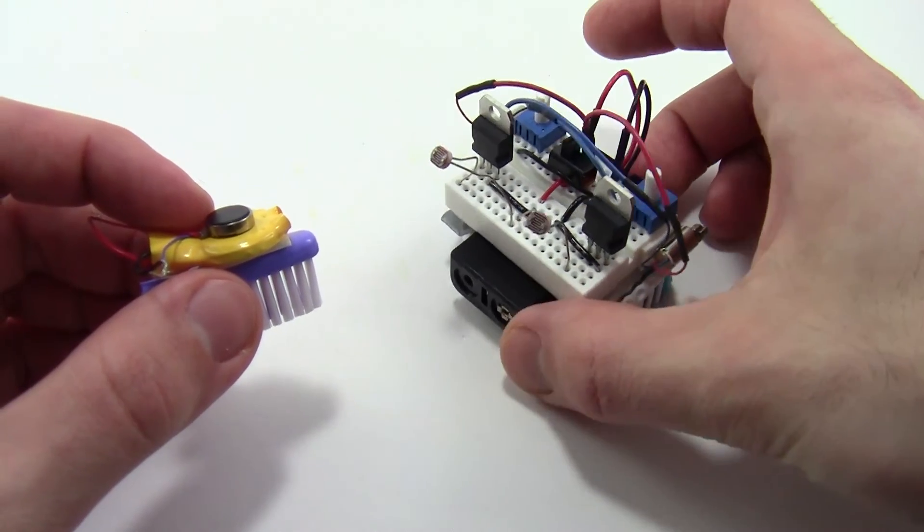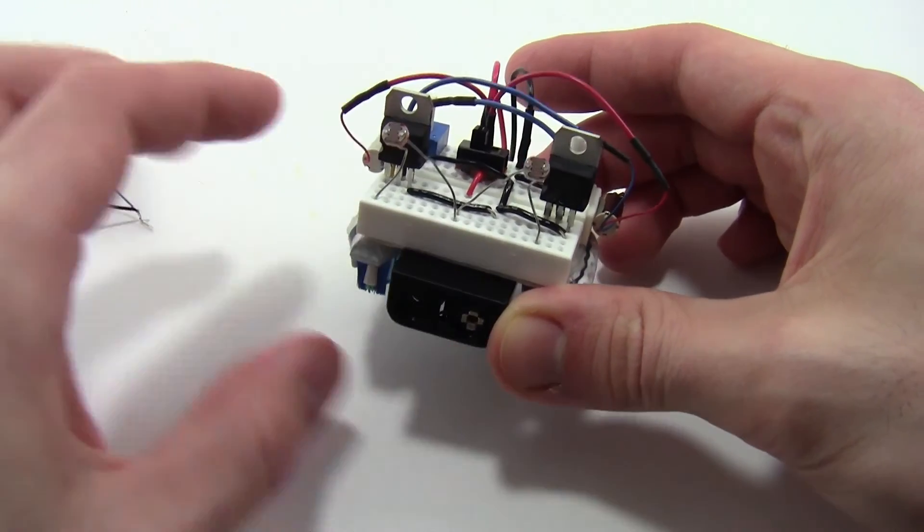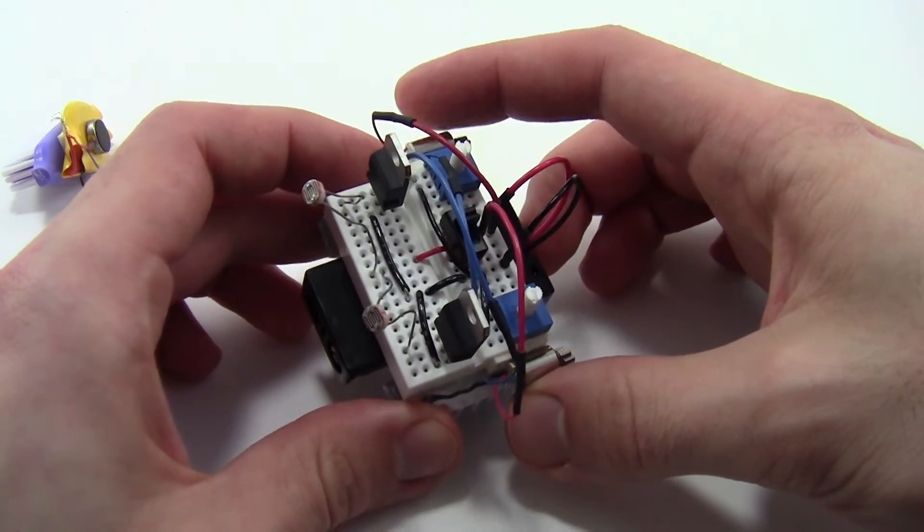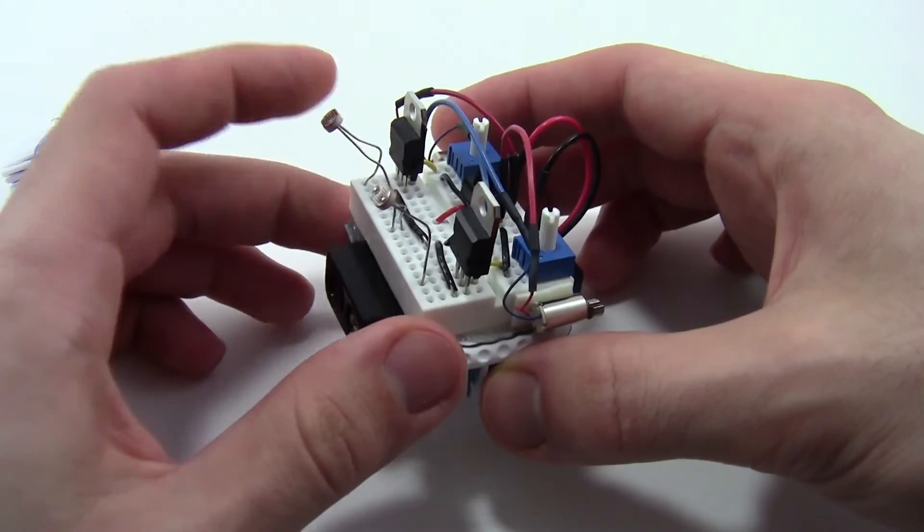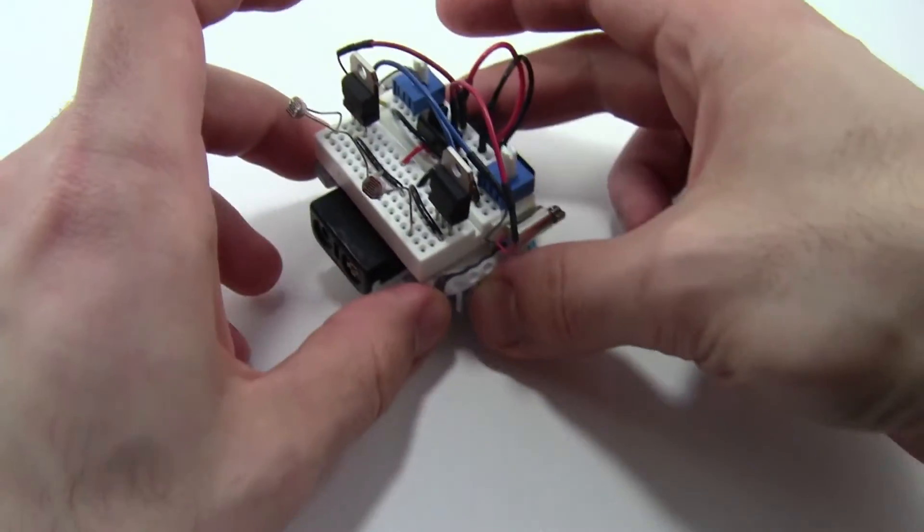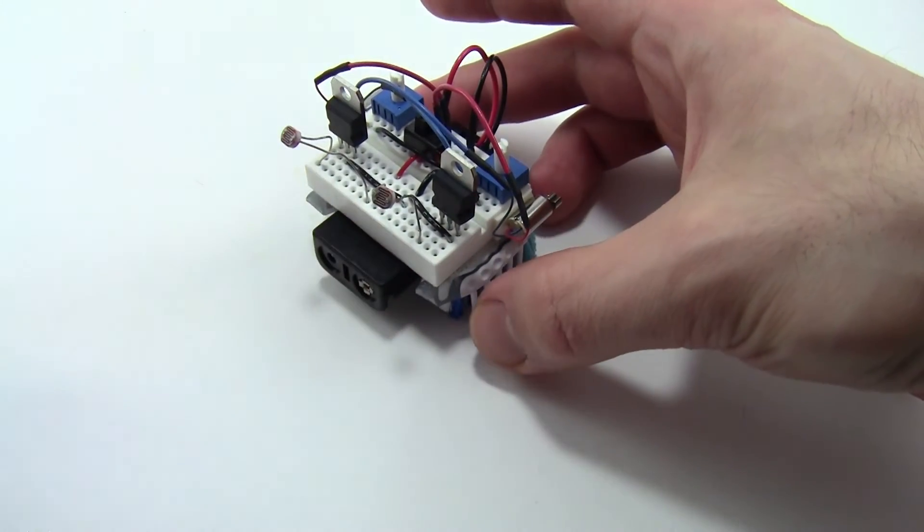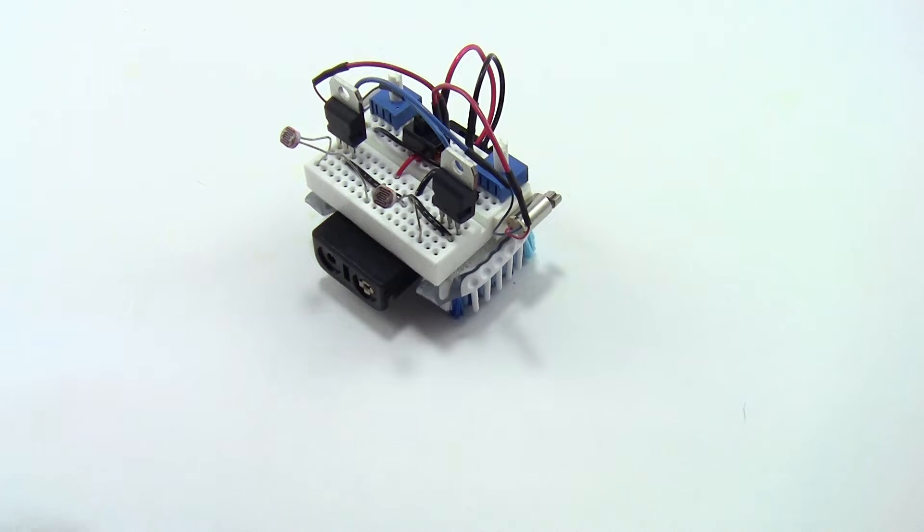A light tracking bristlebot is a more advanced robot that uses the same concept. It has two vibrating motors that power its motion, but these motors are controlled by two light sensors. This allows the robot to drive forward or steer left or right in response to a flashlight.